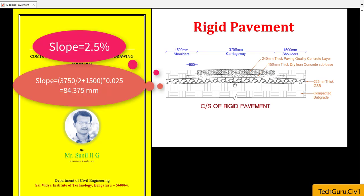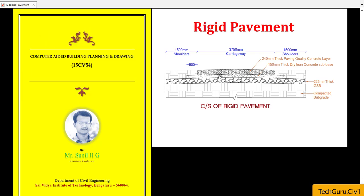This pavement is provided with a slope. The slope will be taken as 2.5 percent of the length — that is (3750 divided by 2 plus 1500), multiplied by 2.5 percent, which is 0.025. You will get 84.375 mm. Please remember 84.375 mm — we will make use of this value for providing the slope for this pavement.